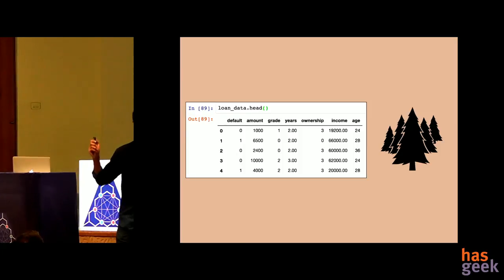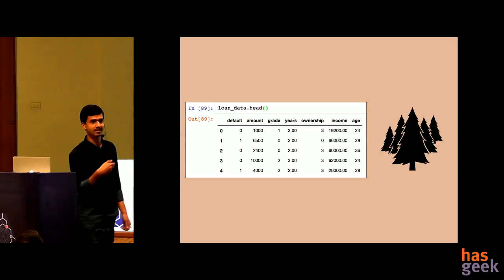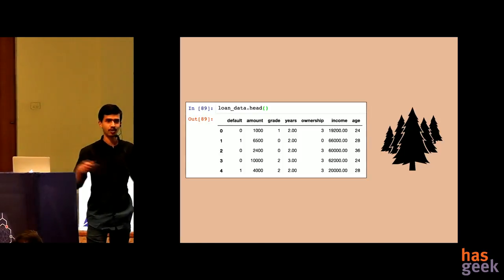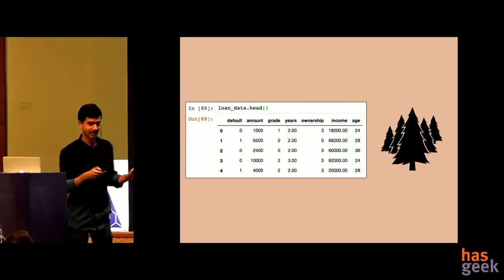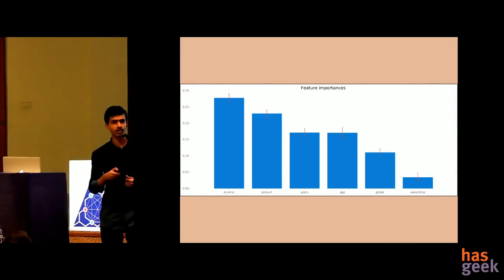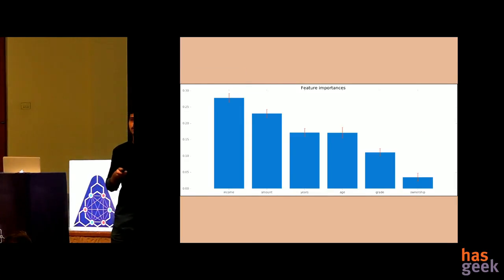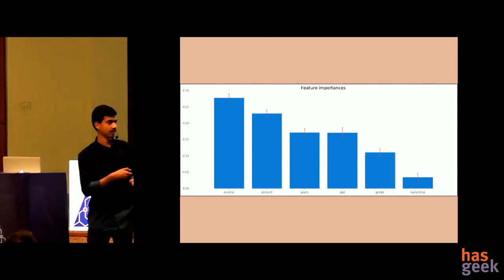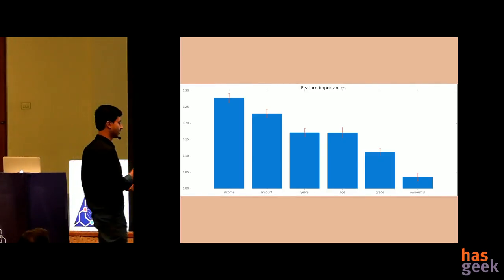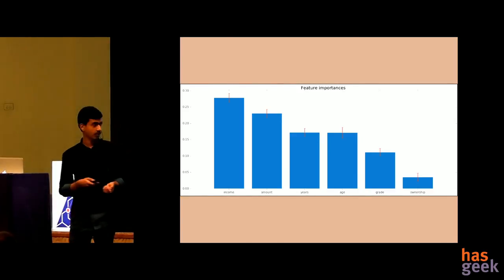Then you run to scikit-learn and train directly a random forest classifier and give it to your boss and say that your job's done. You also find out feature importances because your boss is concerned with interpretability - what features are important in your model. You show him that the amount of the loan, the term, the age, credit grade and all of these are important features.